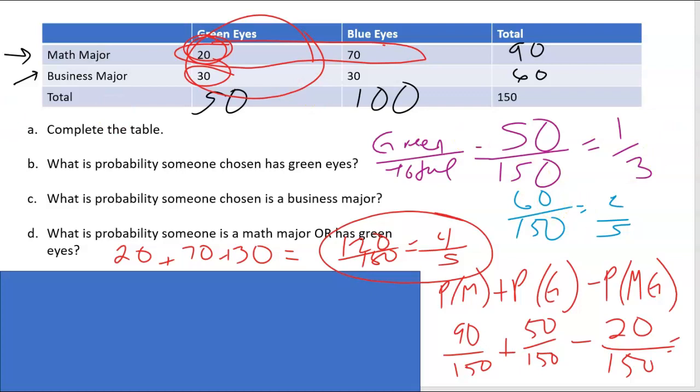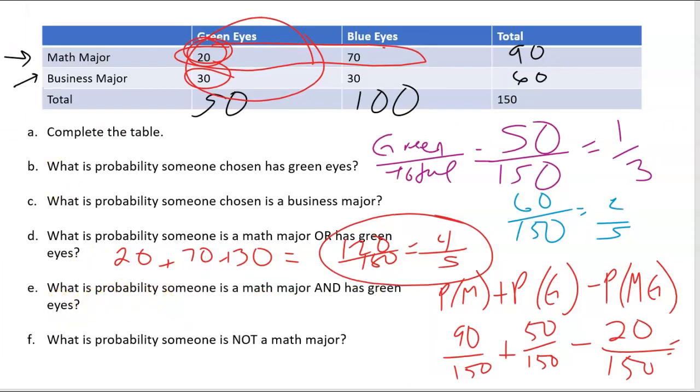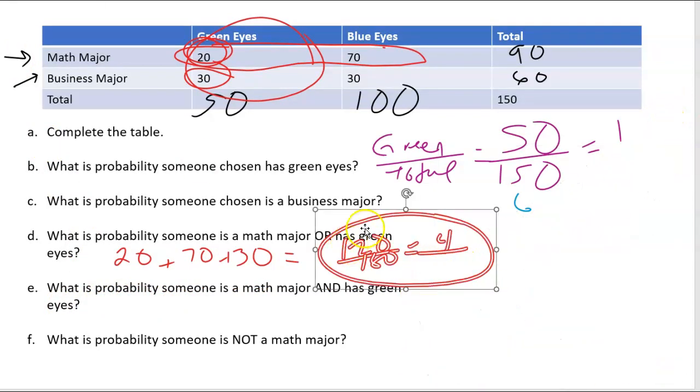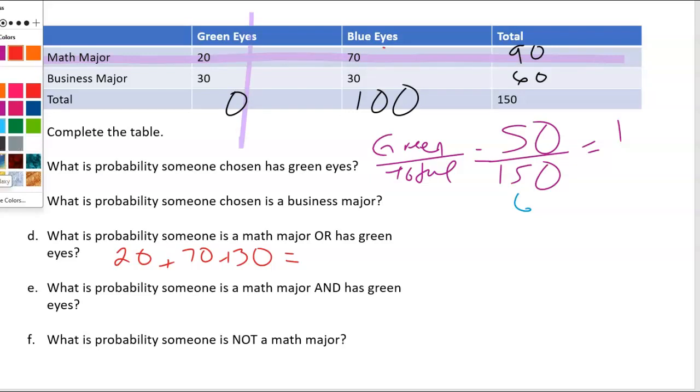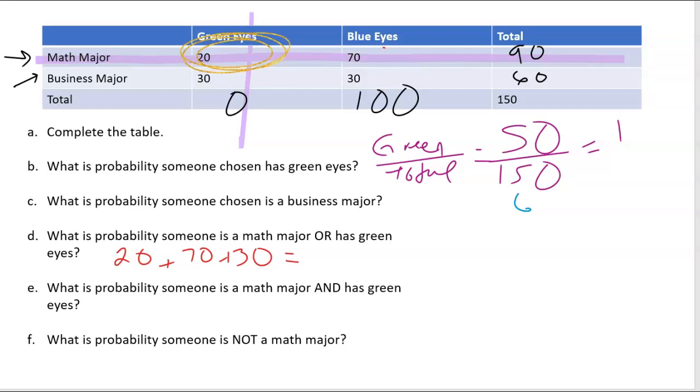Okay. So now let's go ahead and get rid of this blue box. Let's go to letter E. What is the probability someone is a math major and has green eyes? So let me go back to our table up here. We're looking at math major, which is this row and green eyes. Now, the key here is the word and because we only care about those that have the overlap, the math and green. So math and green is 20 over the total of 150. So that reduces to just two fifteenths. So you have to keep in mind whether you have the word or or and because it makes a difference.